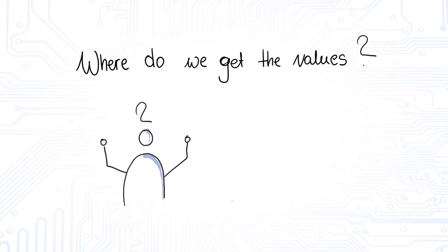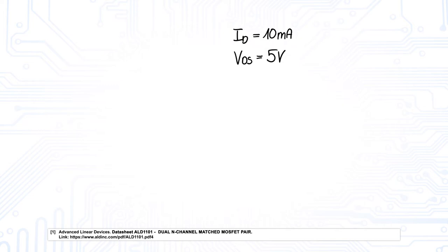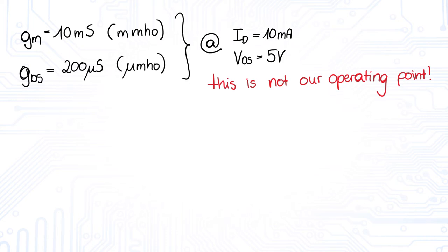But where do we get the values of K and lambda? Actually, they can't be found in the datasheets, so we have to do some work around with other quantities from the datasheet. We use the transistor ALD1101. In the datasheet we find the transconductance and the output conductance for another operating point, and not our operating point. The operating point for which these quantities are defined is at ID is 10 mA and VDS is 5 V. GM is 10 mS and GDS is 200 mS. Be aware that in some datasheets instead of the unit Siemens, the unit MHO is used, which is the same. The threshold voltage VTH is 0.7 V and is constant for every operating point.